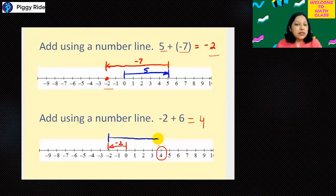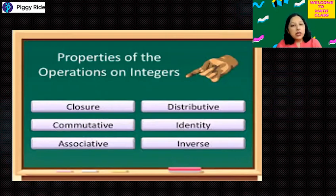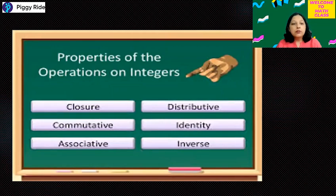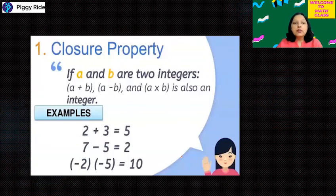Integers have many properties based on operations like addition, subtraction, multiplication, and division. Let's discuss the common properties of integers. The first is closure property, then commutative property, then associative, then distributive, identity, and inverse. Let's discuss one by one, starting with closure property.